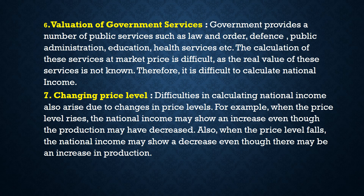Number 7: changing price level. Every time there is a fluctuation in the price level, it is very difficult to calculate national income. Difficulties in calculating national income also arise due to changes in price level. For example, when the price level rises, national income may show an increase even though production may have decreased. When the price level falls, national income may show a decrease even though there may be an increase in production. This completes the theoretical difficulties.